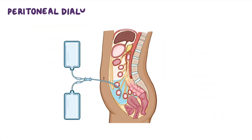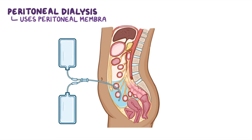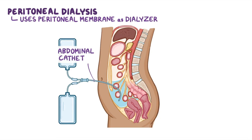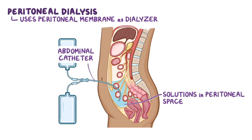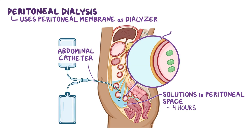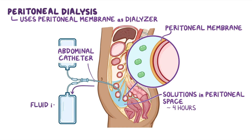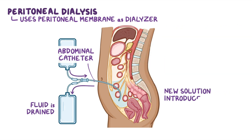Finally, let's look at peritoneal dialysis, which uses the peritoneal membrane as a dialyzer. Through the abdominal catheter, certain solutions are introduced in the abdominal cavity and dwell in the peritoneal space for a certain amount of time, usually four hours. During this time, toxins are filtered through the peritoneal membrane. Afterwards, the fluid is drained and a new solution is introduced into the peritoneal cavity.